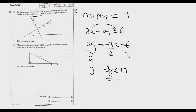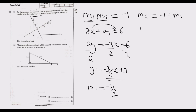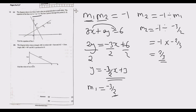Having found m1, we can find m2. Since m1 times m2 equals negative 1 for perpendicular lines, m2 equals negative 1 divided by m1. That's negative 1 divided by negative 3 over 2, which becomes 2 over 3. So the gradient of the perpendicular line L is 2 over 3.